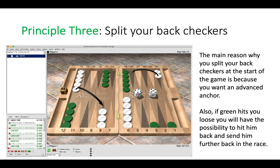Principle three is split your back checkers. So here 24 to 20, 13 to 8. Anything else would be a mistake.